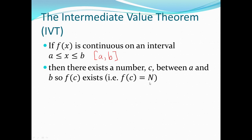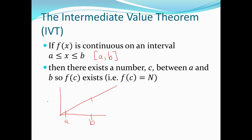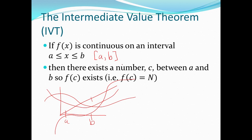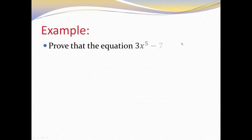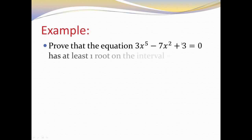This theorem seems pretty obvious, and to be honest it is, because a continuous function — if I have a straight line, here's a and here's b — I can pick any number between a and b and my function will exist. The same is true of a trig function, a polynomial function, or basically any continuous function. As long as the function is continuous between a and b, there's a number between a and b that keeps the function existing. There are some useful applications, like: prove that 3x to the fifth minus 7x squared plus 3 equals 0 has at least one root on the interval x between negative 2 and 0.